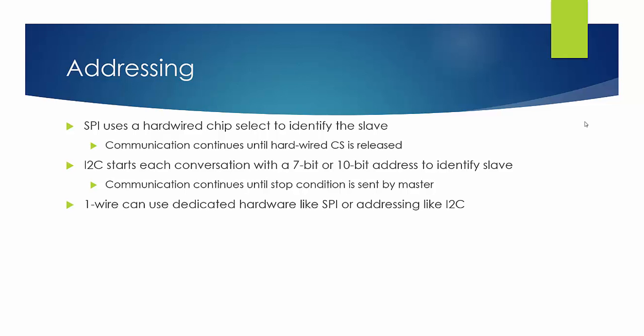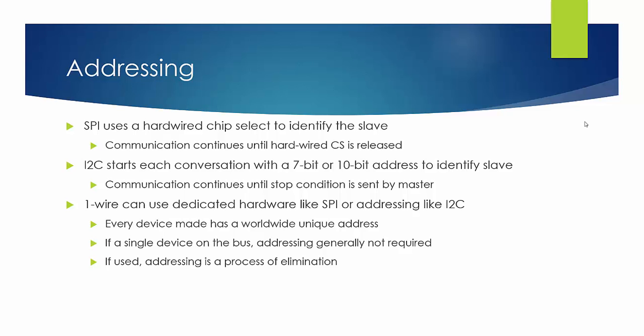One wire can use dedicated hardware like SPI or addressing like I2C. As I mentioned earlier, every device has a worldwide unique address and that address can be used to identify it on the bus. But if there's a single device on the bus, then addressing is generally not required. If addressing is used, it's a process of elimination and any device that receives an offending command or any device that recognizes that it has not been addressed goes to sleep and it stays asleep until the master issues a new bus reset. Once the slave has been selected, communication continues until the slave receives an excluding address or an offending command.